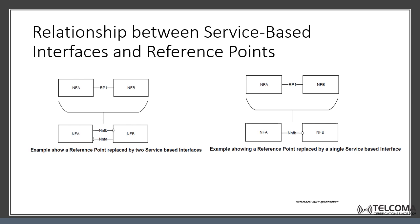The service-based interface and reference points are two different ways to model the interaction between network elements. A reference point is a conceptual point at the conjunction of two non-overlapping functional groups, and it can be replaced by one service-based interface, or by two service-based interfaces which provide equivalent function. Reference points exist between two specific network functions, even if the functionality is equal on two reference points — for example, between two UPFs or two SMFs.